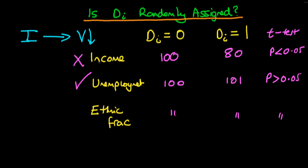We could also do a regression of violence on the various variables in question, which would help us determine whether these variables were in fact important in determining the level of violence within a region. We'd probably include the variable Di as part of this regression as well, just to ensure we're not omitting an important variable.